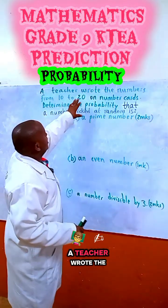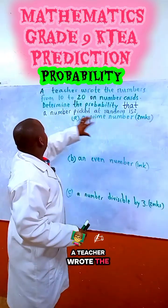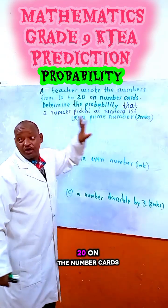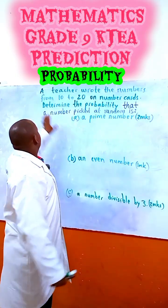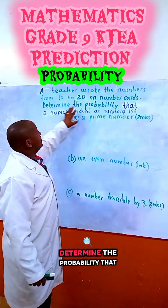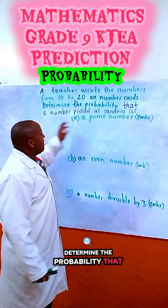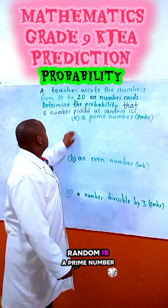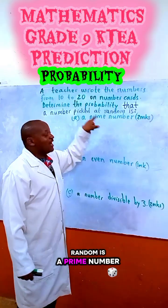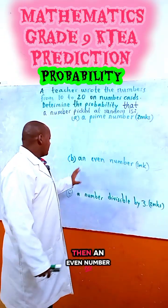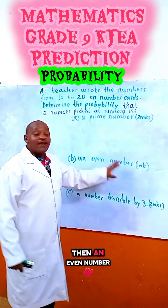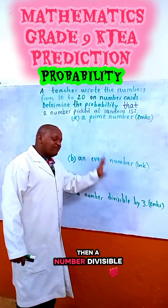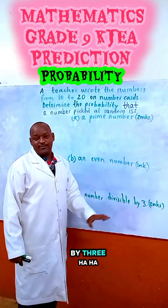A teacher wrote the numbers from 10 to 20 on number cards. Determine the probability that a number picked at random is a prime number, then an even number, then a number divisible by 3.